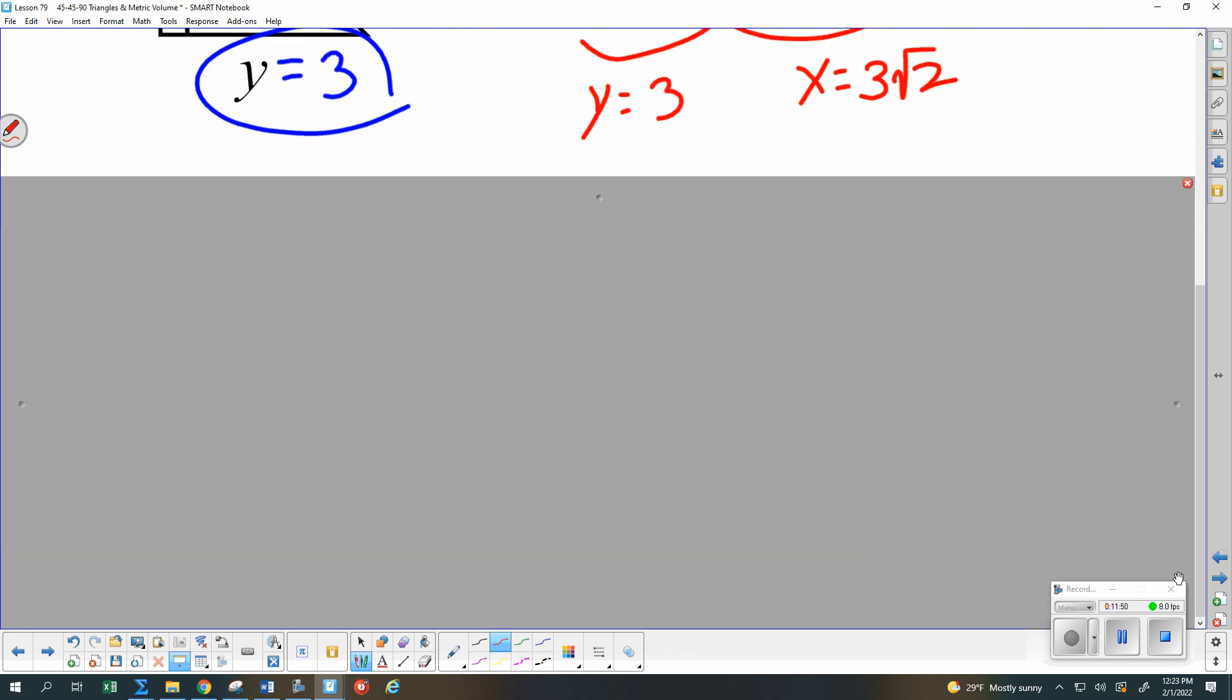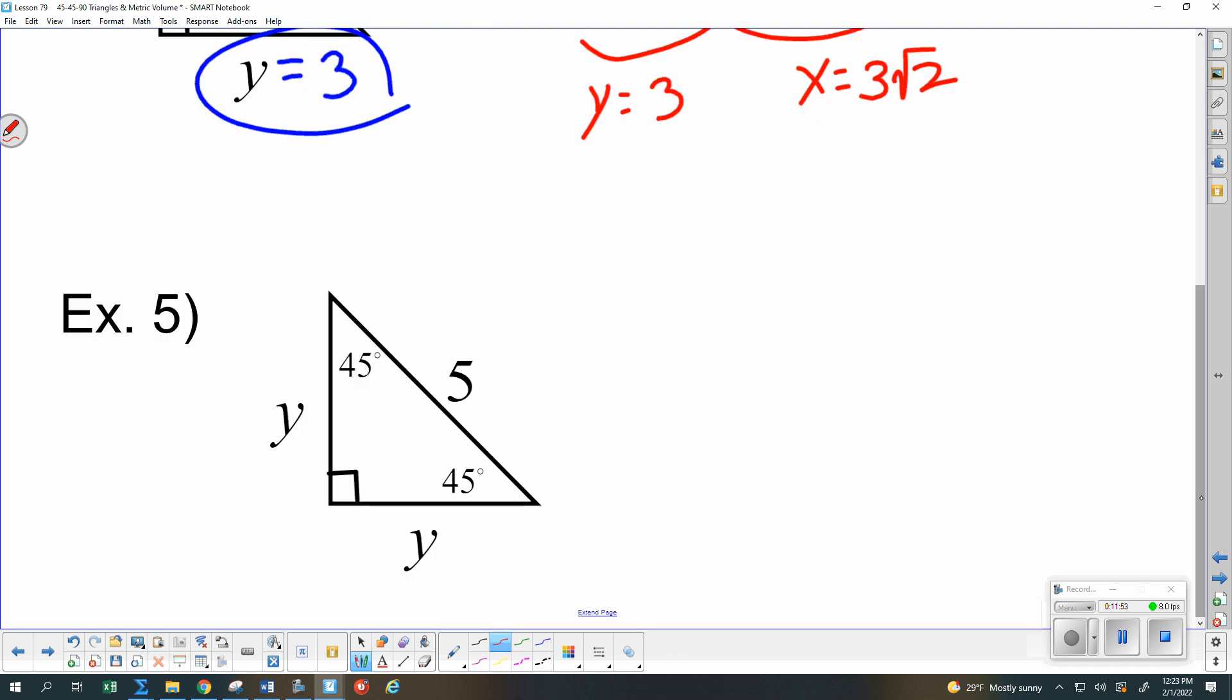So one more example, and then we will call it a day and work on the homework. This time what I know is the hypotenuse, not one of the legs. So make sure I have a reference triangle on my problem set close to this problem so I can look at it. It is OK to set up the proportions. It is also OK to say, oh, I know the hypotenuse, so if I want a leg, I need to divide by the root of 2. That way would say, y is 5 divided by root 2. Rationalize the denominator. And y is 5 root 2 over 2.